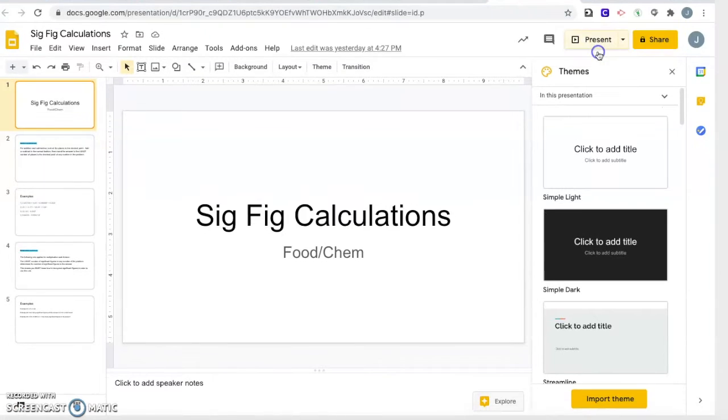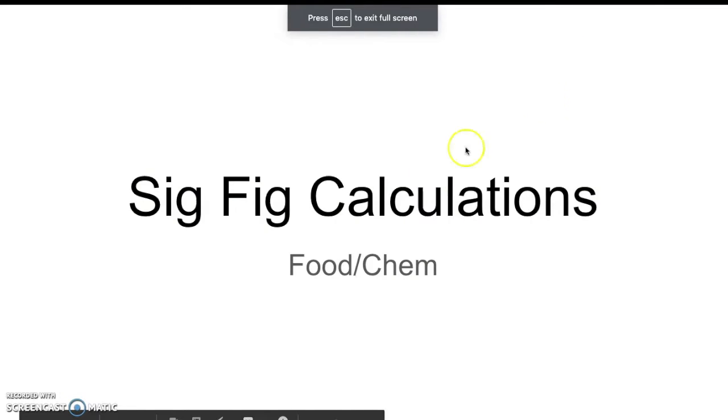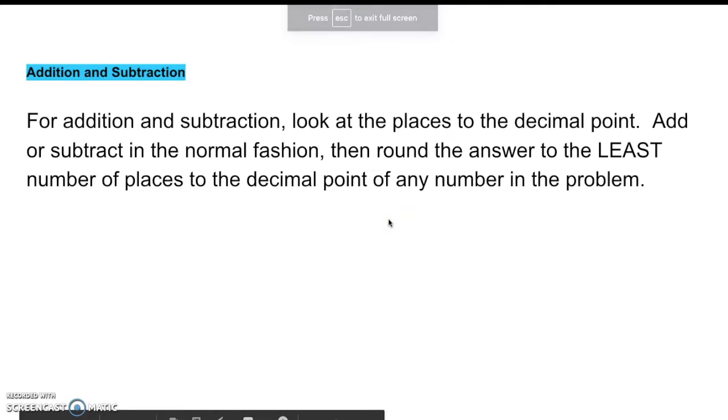Okay, sig fig calculations. Let's talk about it. So when we add and subtract, we look at the places to the decimal point. Add or subtract in the normal fashion, so use your calculator to get your answer. Then round your answer to the least number of places to the decimal point of any number in the problem. So that's what it is in words. It's easier to look at it as if we were actually doing it. So that's what we're going to do.